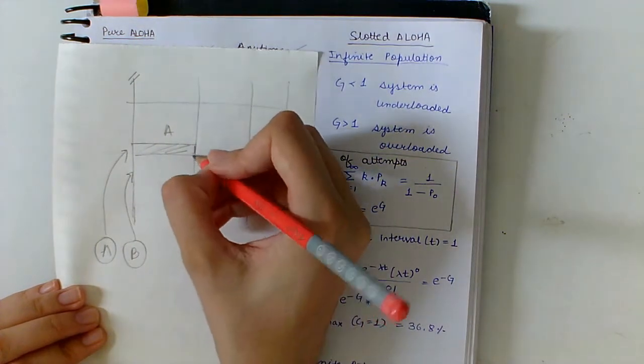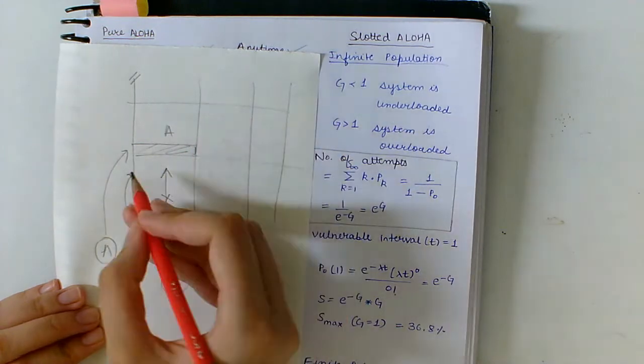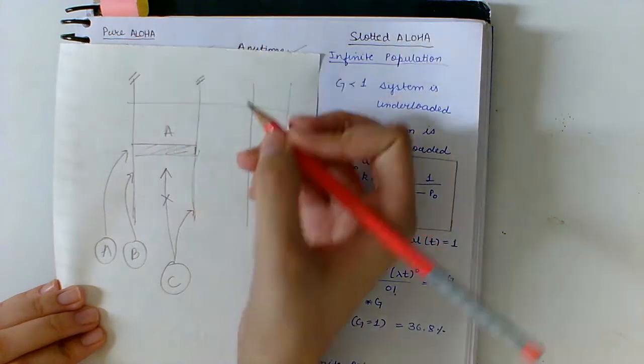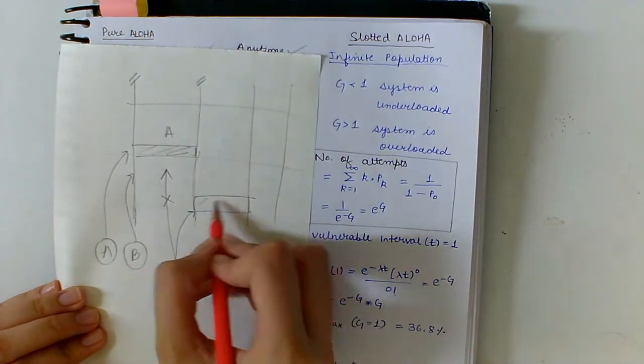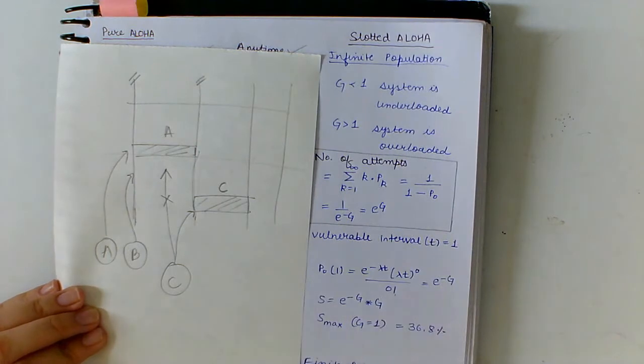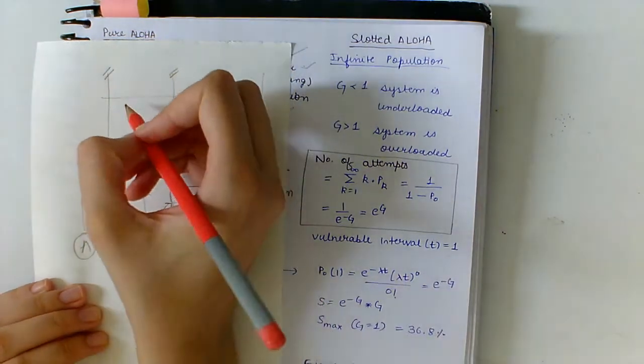So A and B do this. If one of them wins, A transmits its frame. Then if C comes, C cannot just barge in between. C has to wait for the next time interval, which is this, and then start transmitting if it gets a free channel.